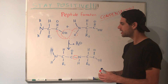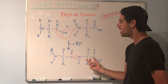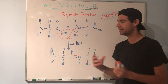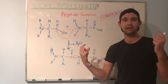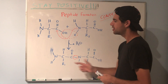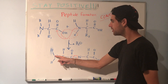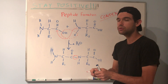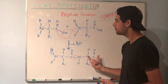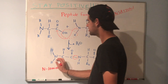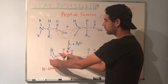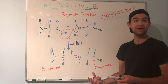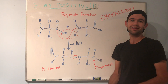One last thing: in any dipeptide, tripeptide, or even hundreds or thousands of amino acids connected together, you will have two ends of that long strand. An end with an amino group and an end with a carboxyl group — that's why we say there are two termini of any peptide. We call the amino group end the N-terminus and the carboxyl group end the C-terminus. That's an introduction to amino acid structure. I hope you found that helpful. Thanks for watching.